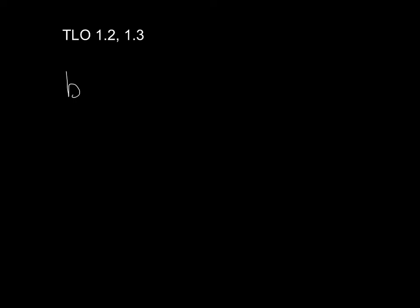Let me step back and look at the general process of updating anything — it's really all the same. You just have to look at how the new value depends on the old value and the change in the value. Take the dumbest thing you can think of: your bank account balance. The new balance is the old balance plus the change in balance. If you add money, delta B is positive and the new balance is larger. If you take money out, delta B is negative and the new balance is smaller.